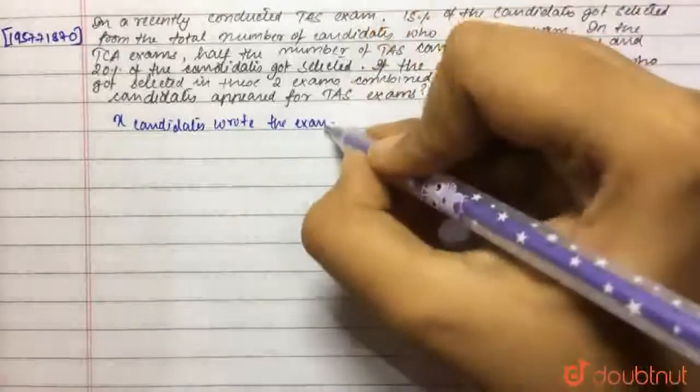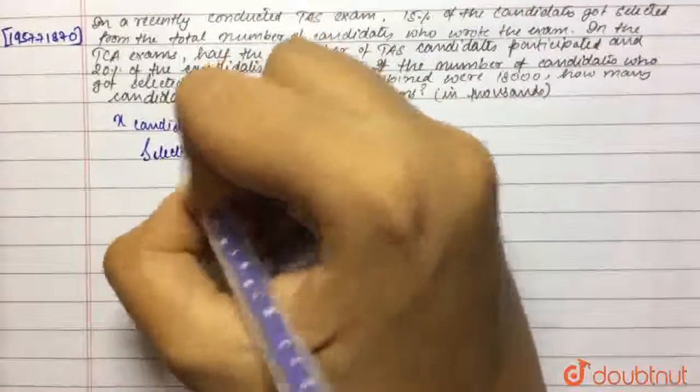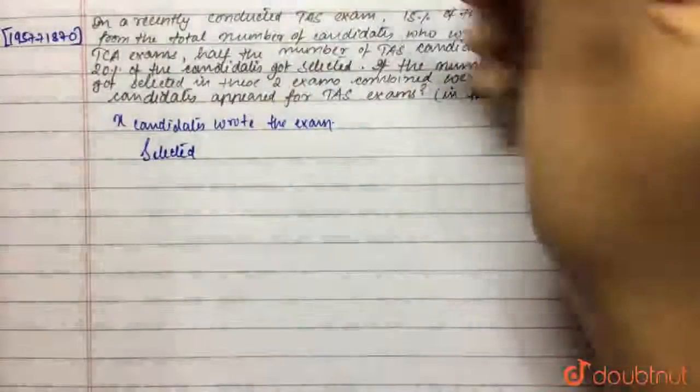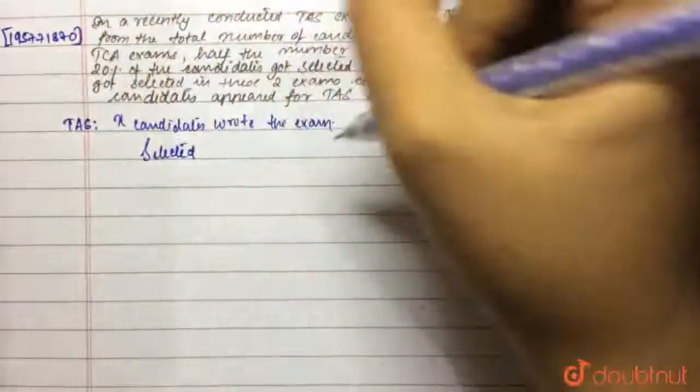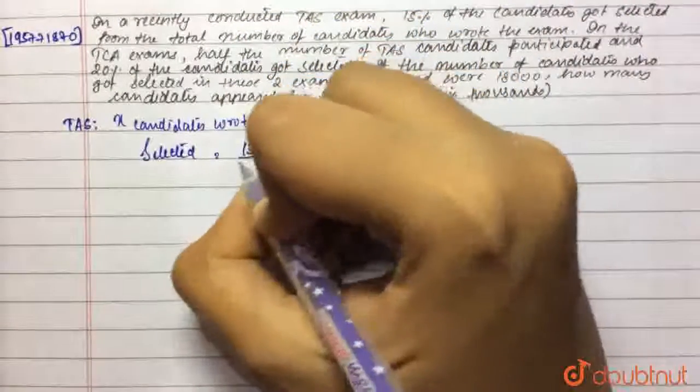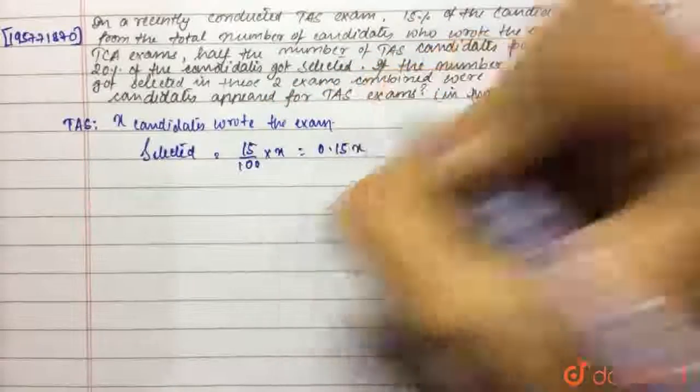So, 15% got selected. That means, selected will be... This was the TAS exam. So, let's write it down. TAS, X candidates wrote the exam and selected were 15%. So, 15 out of 100 into X, that is 0.15X.